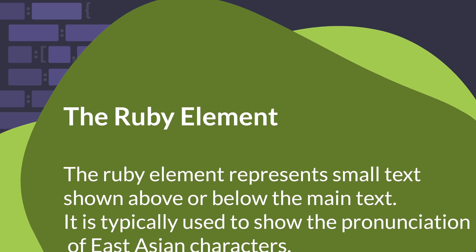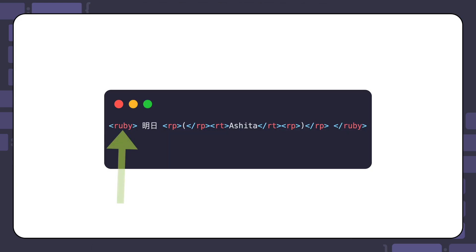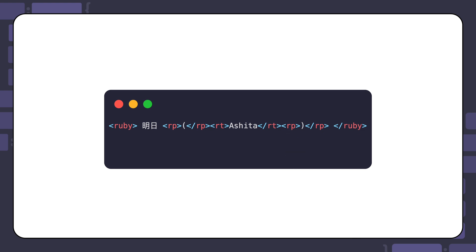Here is the Ruby element example from the MDN web docs page. The RP element, or Ruby fallback parentheses element, is used as a fallback for browsers lacking support for displaying Ruby annotations. The RT element, or Ruby text element, is used to indicate text for the Ruby annotation, usually for pronunciation or translation details in East Asian typography.